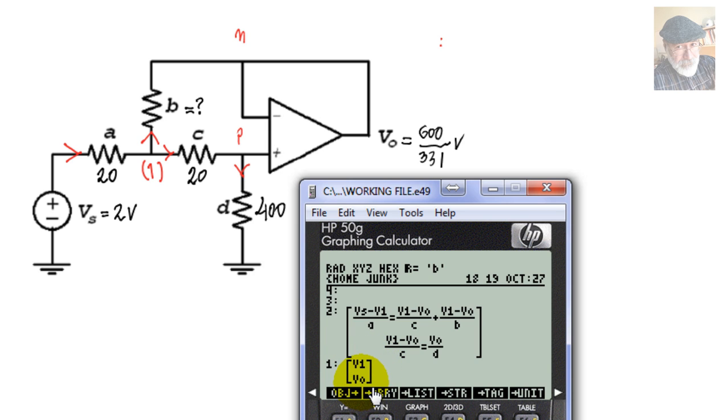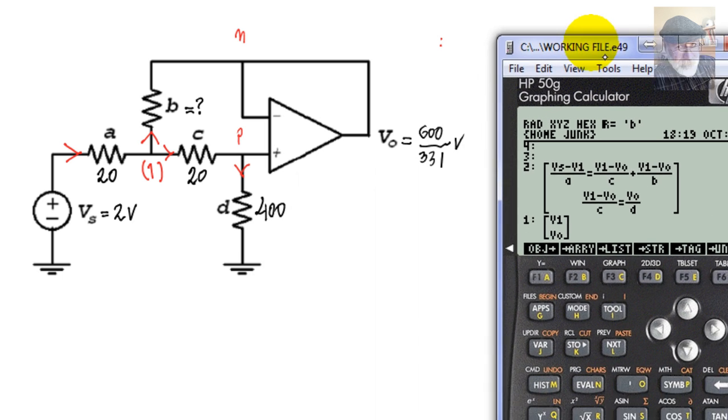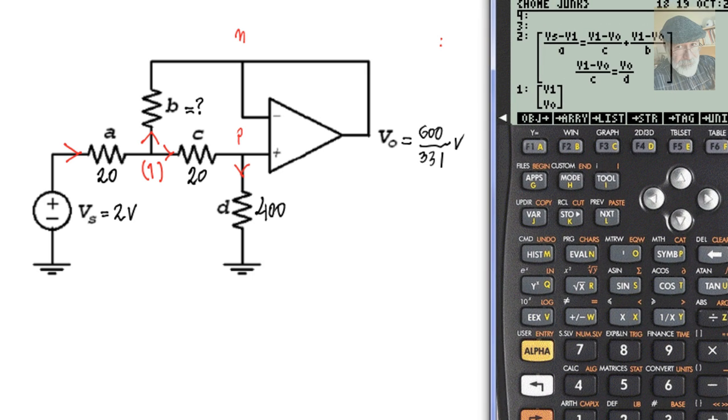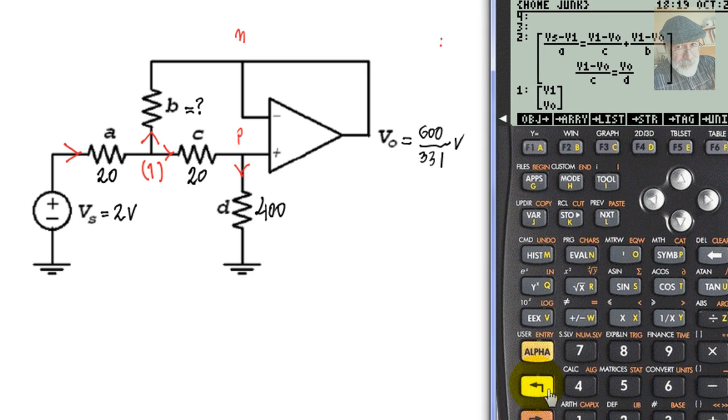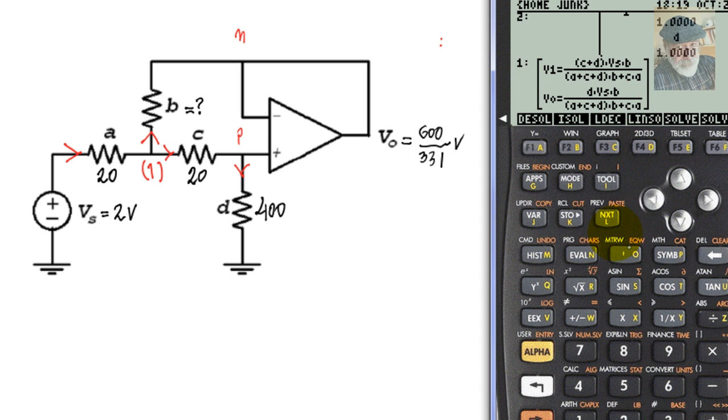Let me move this over here so that I can ask for symbolic solver, linear solver, and solve for v1 and v0. Observe that those are formulas given in terms of the four resistors A, B, C, D, and of the input source Vs.